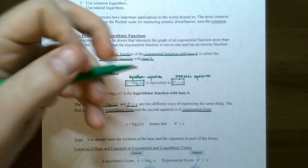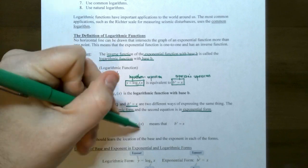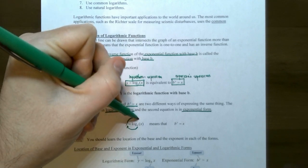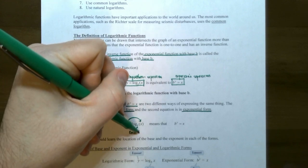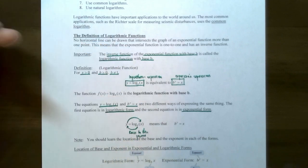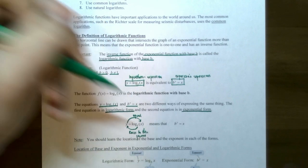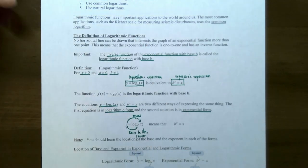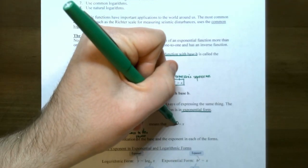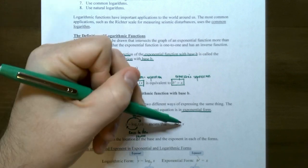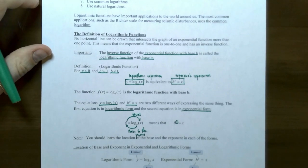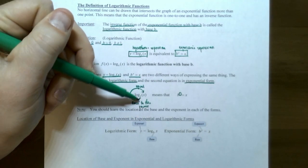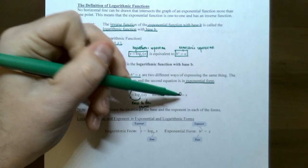These two forms — logarithmic form and exponential form — say the exact same thing. Logarithmic form: log base B of x equals y. Exponential form: B raised to the y exponent equals x. To convert: starting from logarithmic form y equals log base B of x, you take base B raised to the y exponent and it must equal x. The exponent is what the logarithm equals, and the x is what's inside the logarithm. Note the location of the base in each form.